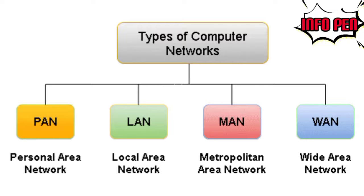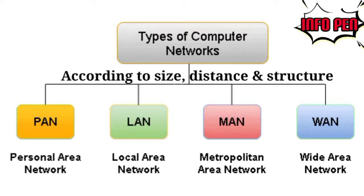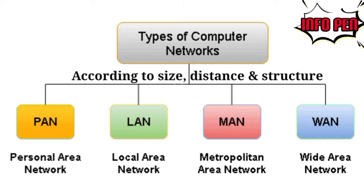Types of computer networks. According to the size, distance, and structure, a computer network can be mainly classified into four types.